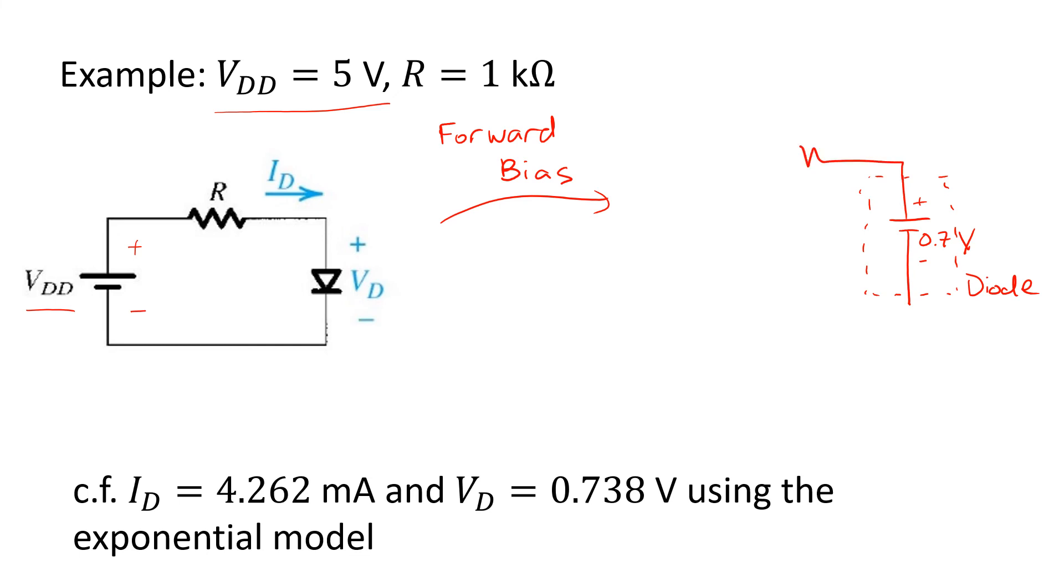Having replaced the diode with its model, we can complete the rest of the circuit. The resistor value is given as 1 kΩ in this case, and V_DD is 5 volts. So we've therefore got a voltage drop of 4.3 volts arising across the resistor. The resistor value being 1 kΩ, that implies a current of 4.3 milliamps.